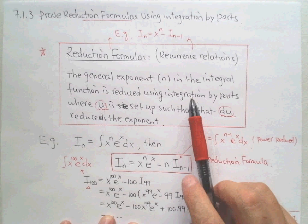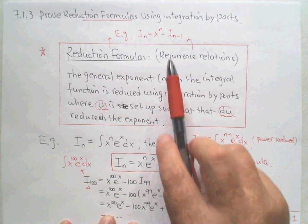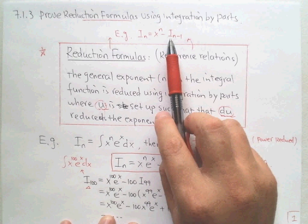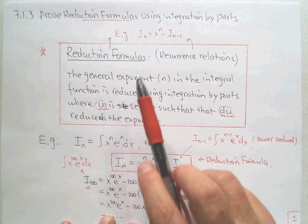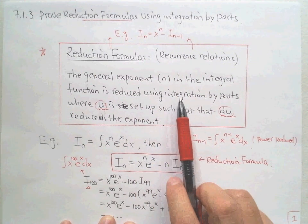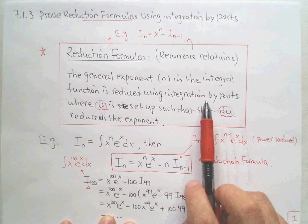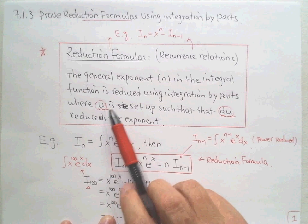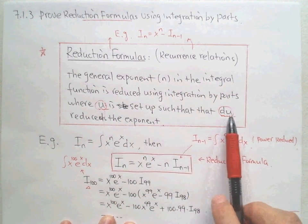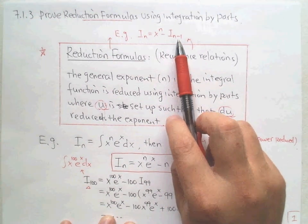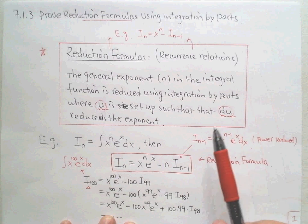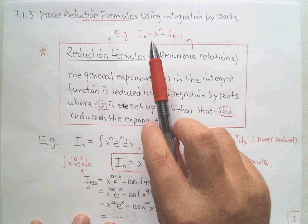Later I'll have an example so you will understand this better. How to reduce: we have a basic rule using integration by parts. How to set up u — the purpose is we set up u so that du can reduce the exponent. By setting up u, we will see. For reduction formulas, give one more example here.